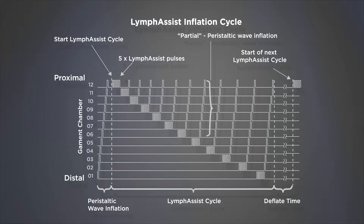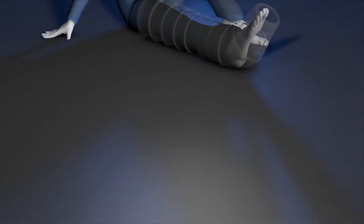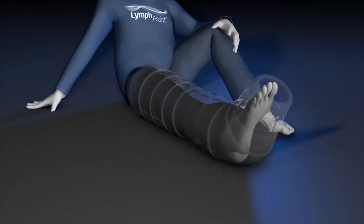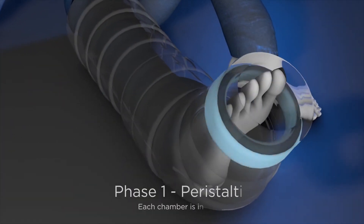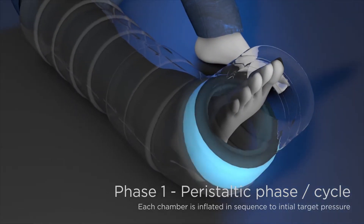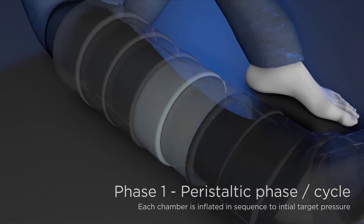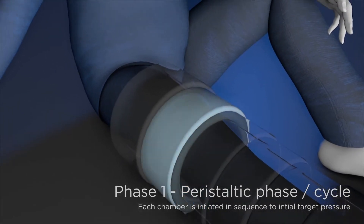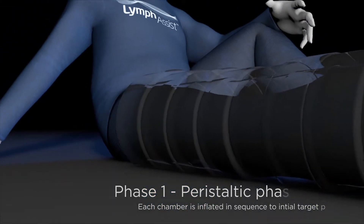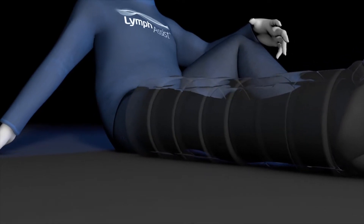The lymph assist mode is a combination of three different patterns: peristaltic waves, lymph assist pulses, and partial peristaltic waves. Having pressed the run/standby button, the system will initialize and begin the sequence. The lymph assist therapy begins by delivering a single peristaltic wave to chamber 1 through to chamber 12, and this light pressure has the effect of softening the surface tissue.